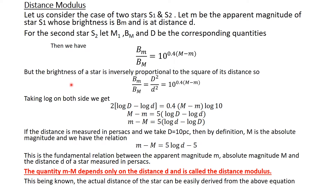We also know that the brightness of a star is inversely proportional to the square of its distance. So we can write B_m / B_M = D² / d², which equals 10 raised to the power 0.4(m − M). Taking log on both sides gives: 2 log D − 2 log d = 0.4(m − M) log 10.